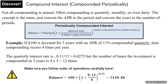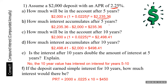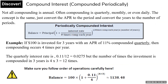So far we've been looking at simple interest and compound interest annually. Now we're going to look at periodic interest — things like quarterly, semi-annually, monthly, weekly, and daily. By doing that, you divide the interest rate by the number of times compounded. The exponent becomes the number of times compounded per year times the number of years.